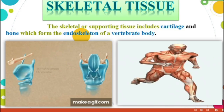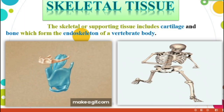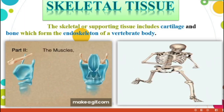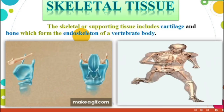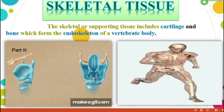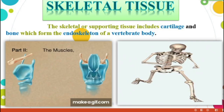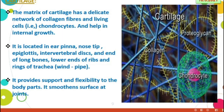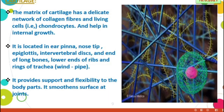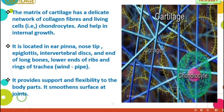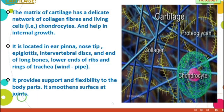The first picture shows cartilage — a soft bone in some regions of the body. The second picture shows the whole human skeletal system — the framework of the body. The bone is highly hard and rigid, a very tough material. In the case of cartilage it is very soft. The matrix of cartilage has a delicate network of collagen fibers, and its cells are called chondrocytes.